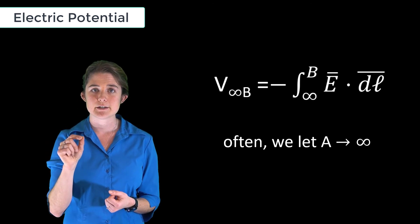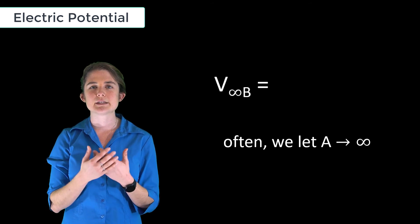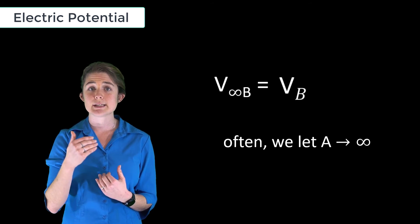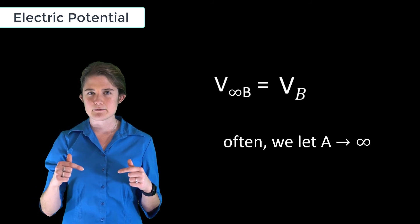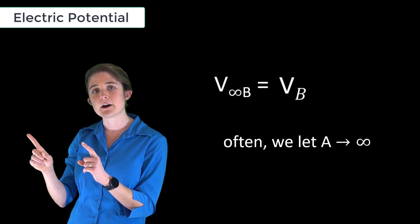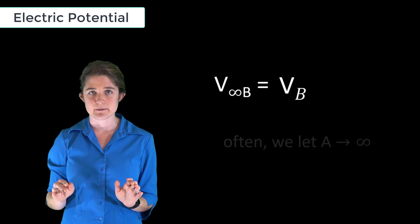B is the final location of the charge. In this case, we can use the simplified notation V_B, meaning the voltage at point B with the implied reference at an infinitely far away location with no electric field.